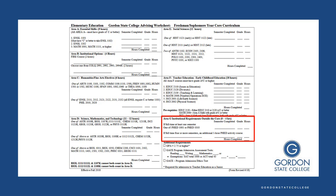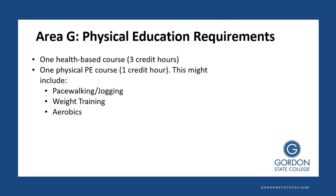Now let's look at Area G, which are institutional requirements that are mainly your health and PE requirements. You want to have one health-based course, which is three credit hours — we have PHED 1001 or 1010, and you can choose between the two. Then you also want to take one physical PE course, which is only one credit hour. This might include something like pace walking or jogging, aerobics, weight training, etc.